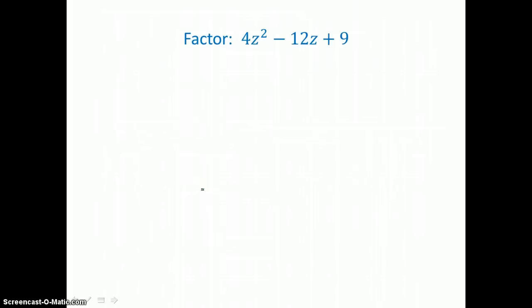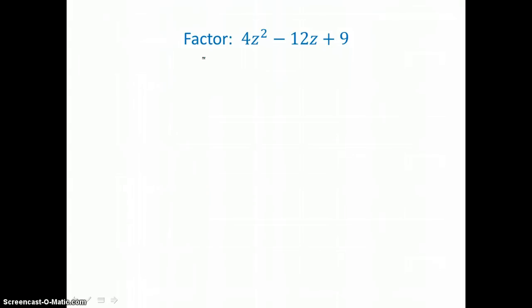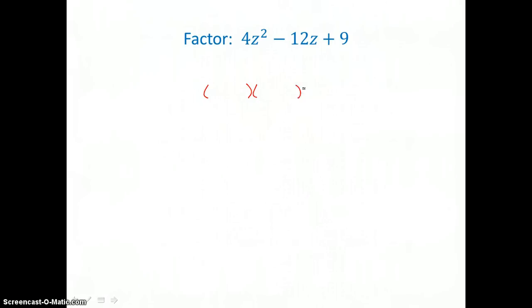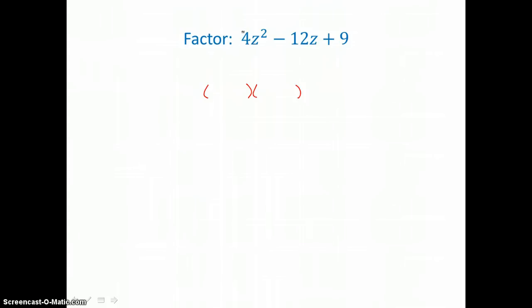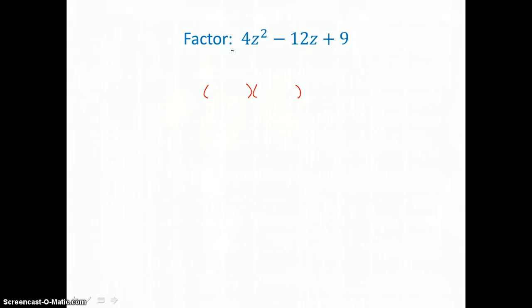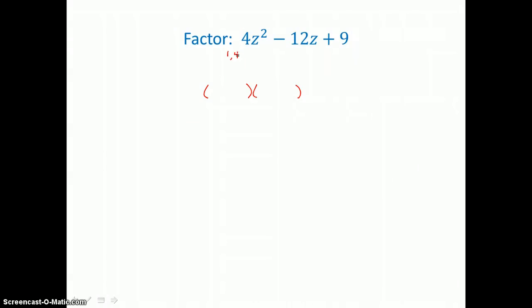In this first example, we're going to factor 4Z squared minus 12Z plus 9. To factor this trinomial, we want to factor it into a binomial times a binomial. It's different from the trinomials in the last section in that our leading coefficient is not 1. So it's going to involve a little more guessing and checking because factors of 4 could be 1 times 4 or 2 times 2.